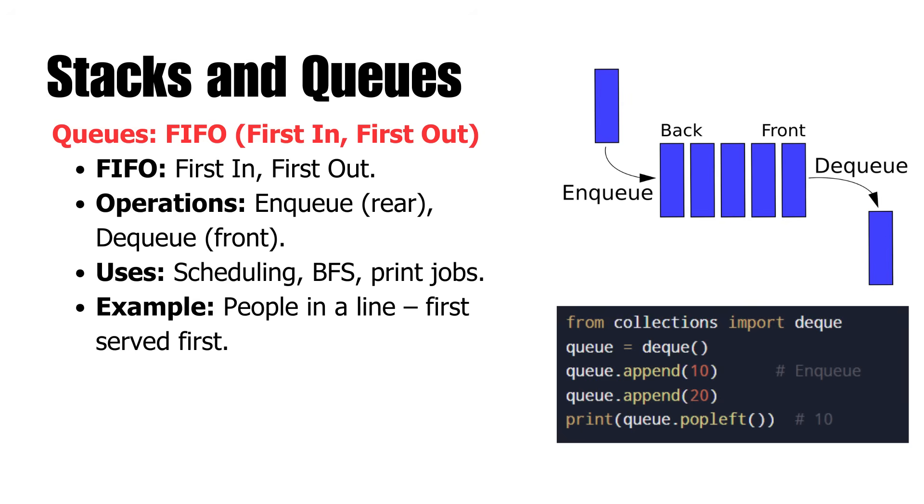Up next, we have queues. A queue is founded on the first in, first out, FIFO strategy. The first element pushed into the queue is also the first one to be removed. Similar to people in a line waiting. The normal operations are adding an element to the rear and retrieving one from the front.